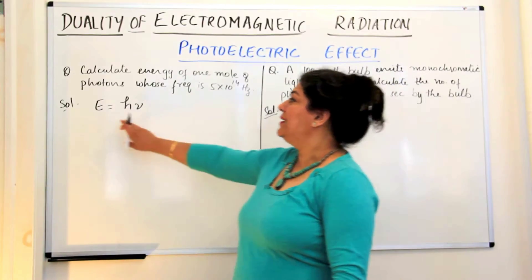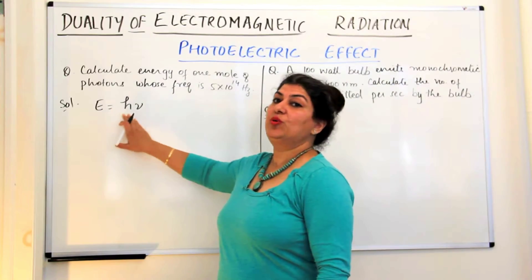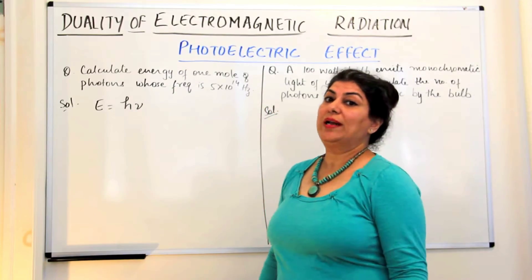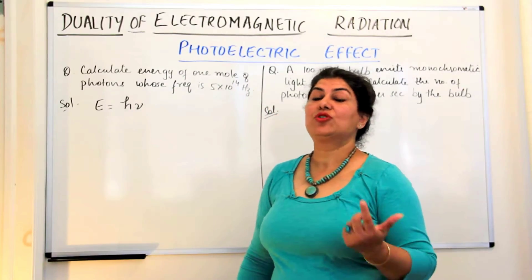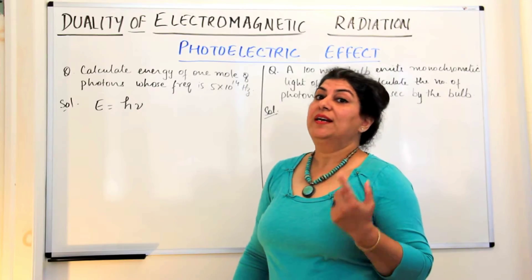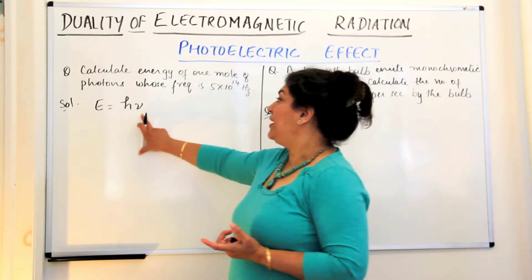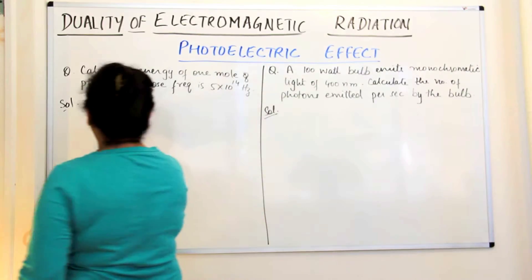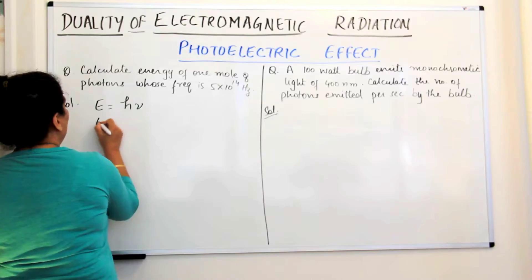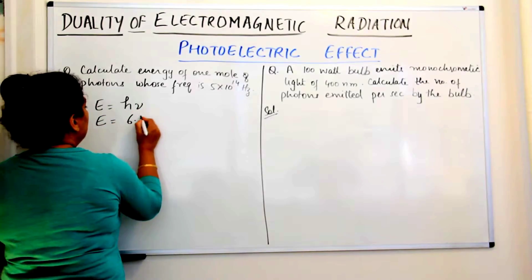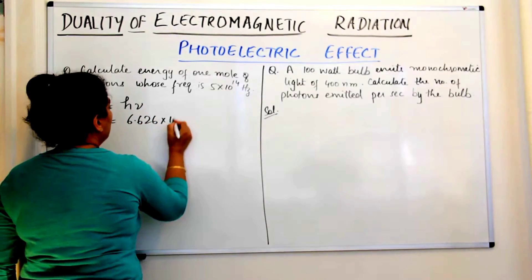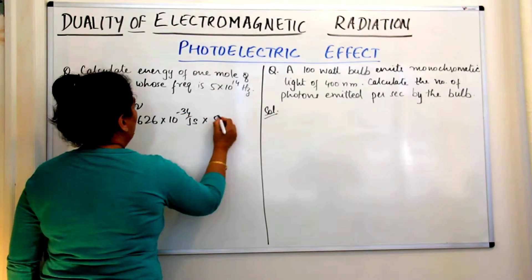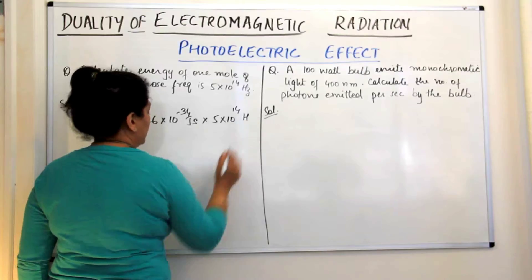We know that the energy of a photon is equal to H nu, where H is the Planck's constant whose value is 6.626 into 10 to the power minus 34 joule-seconds, and frequency is given to us. So we'll calculate E for one photon. The energy of one photon would be equal to 6.626 into 10 to the power minus 34 joule-seconds into 5 into 10 to the power 14 Hertz.